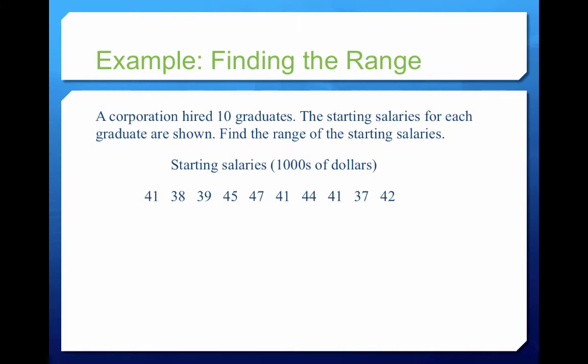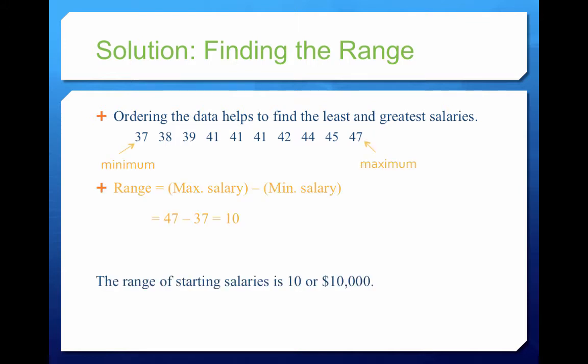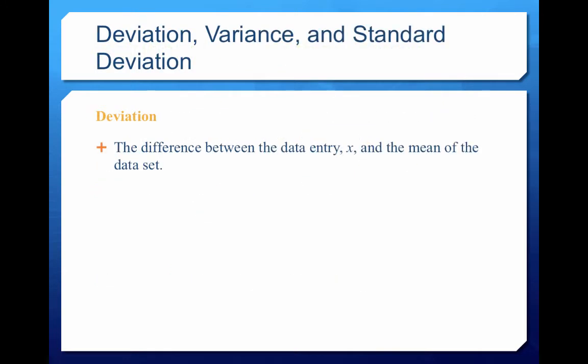A corporation hired ten graduates; the starting salaries for each graduate are shown — find the range. These are salaries in thousands of dollars. We order the data from least to greatest, making it easy to see that our minimum is 37 and our maximum is 47. We subtract to get 10, so the range of starting salaries is $10,000.